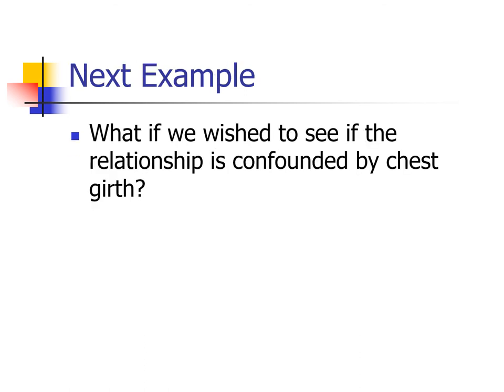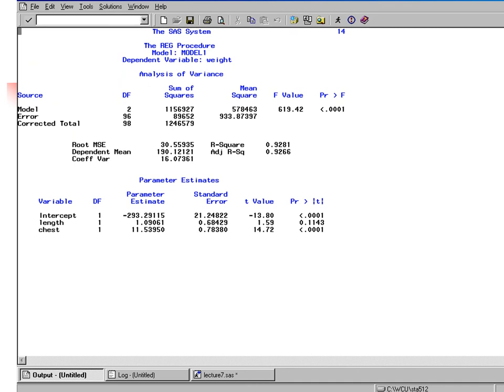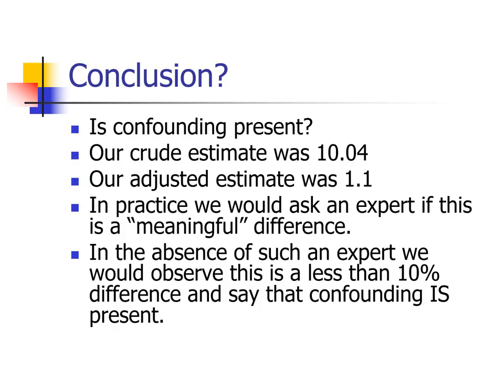What if we wanted to see if the relationship is confounded by chest girth? The crude estimate remains 10.04. Now we look at the adjusted estimate using chest as a covariate — it comes out to 1.1. We went from 10 to 1.1 — that is a roughly 90% change, a dramatic reduction.